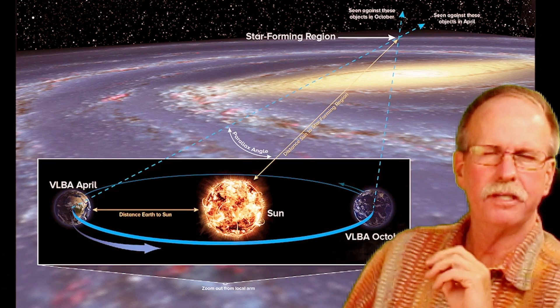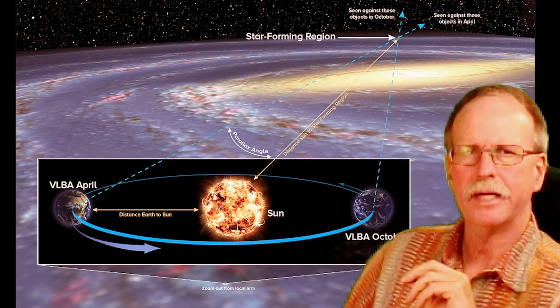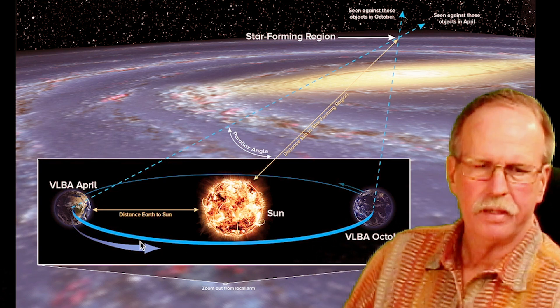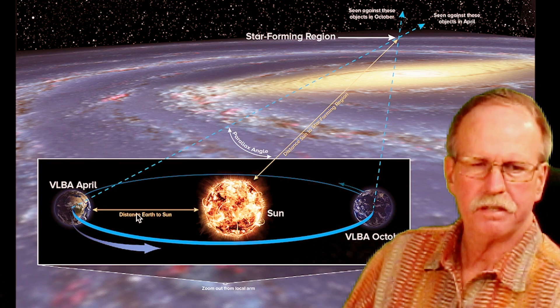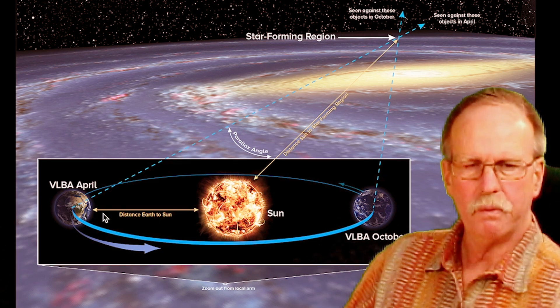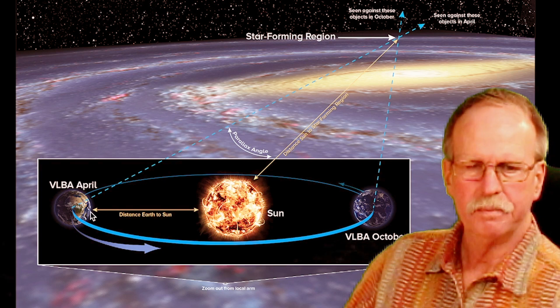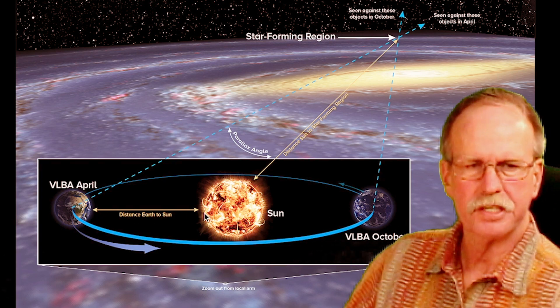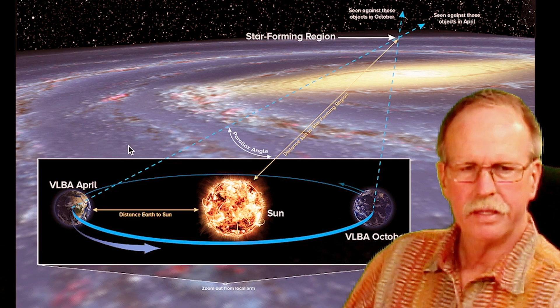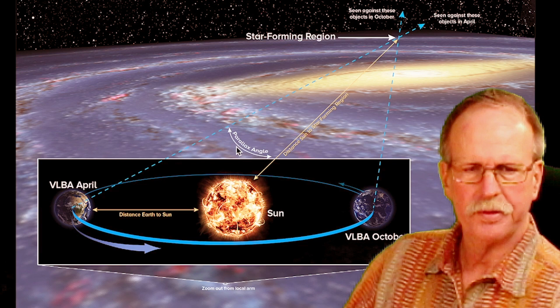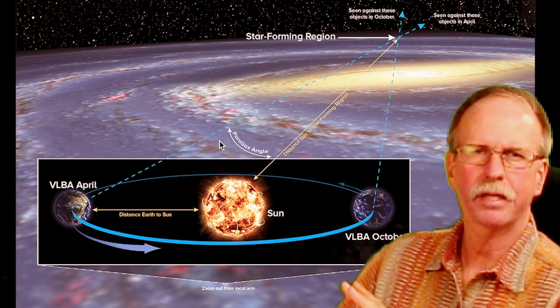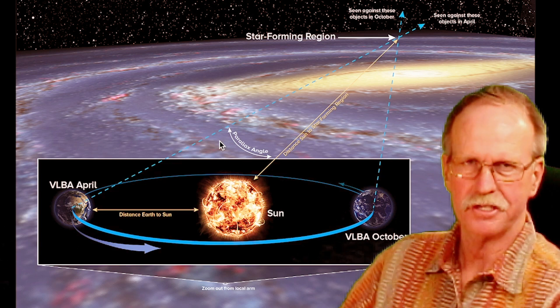Stellar parallax is the use of trigonometry to triangulate the distance to local stars. This is the basic way that we do it. Here is the distance from the Earth to the Sun. This is our baseline. What we do is we form a triangle between the Earth, the Sun, and a star. Then what we measure is this angle called the parallax angle. By using a little trigonometry, we can find our distances to the stars.